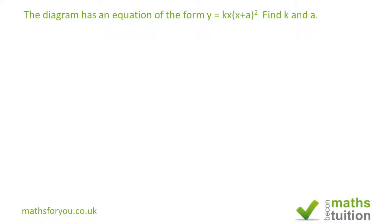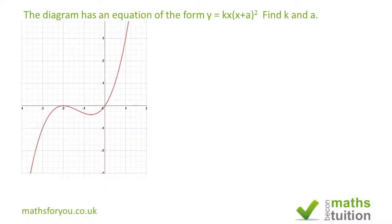Hello and welcome to this exercise on simultaneous equations. We have to find two values, k and a, from a graph. We have been given three coordinates: minus two zero, zero zero, and one three.